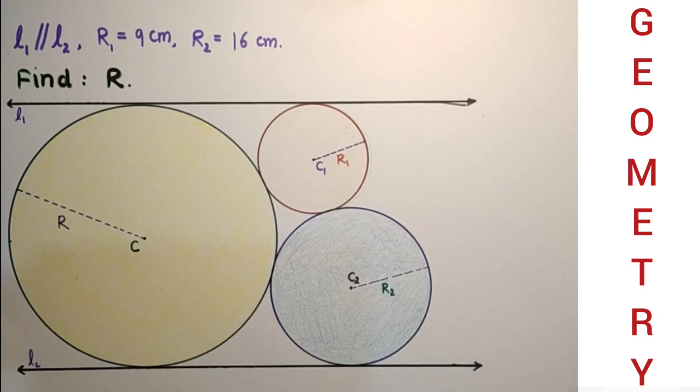Hello viewers and welcome to the channel. Today we will discuss this problem. In the problem, these three circles are touching each other according to the diagram given. These two lines are parallel to each other. This circle touches these two lines.